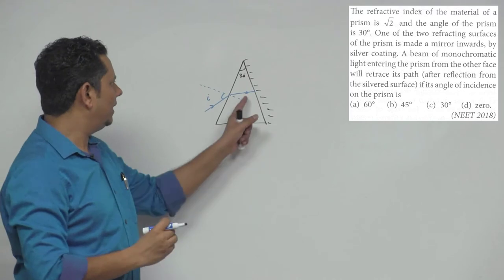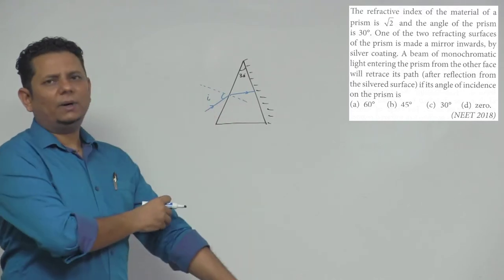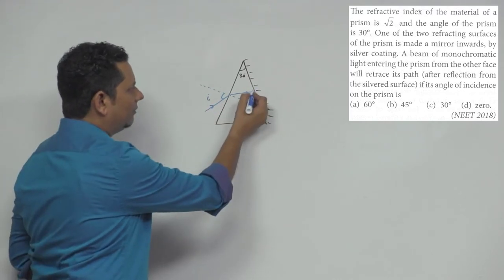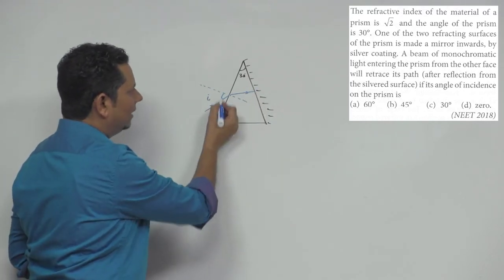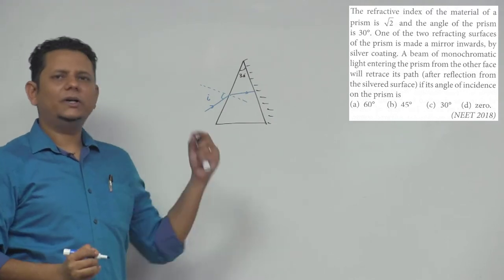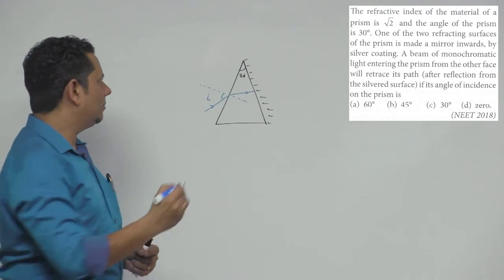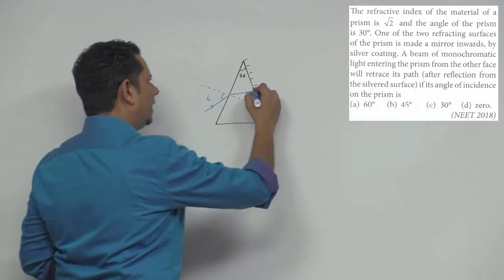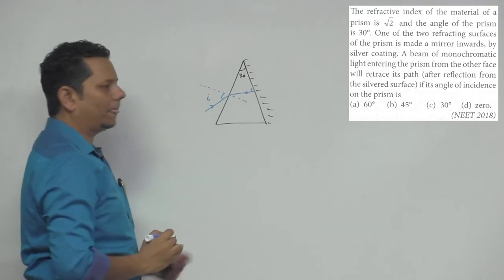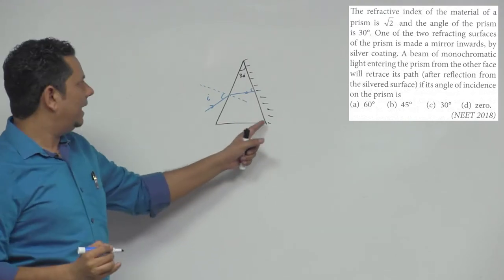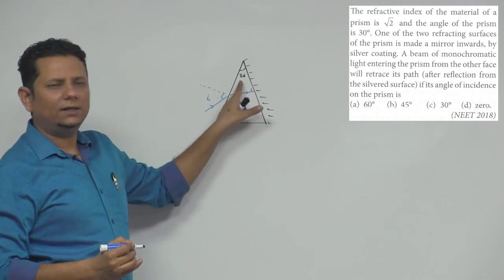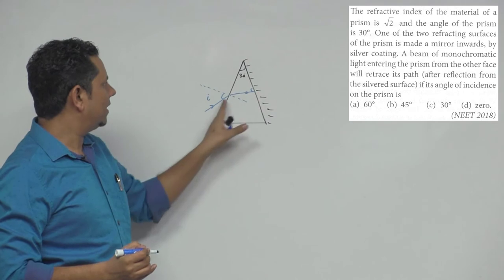If any ray has to retrace its path, it could otherwise reflect and go sideways or upward somewhere. But if it retraces its path, that means this angle must be 90 degrees. So if this angle is 90 degrees, and the prism angle is 30 degrees...